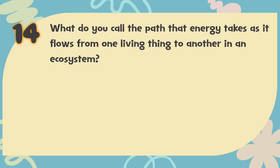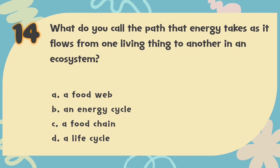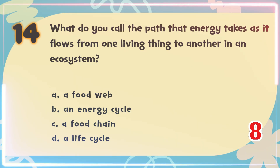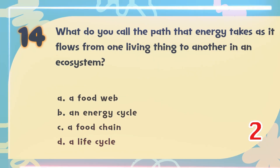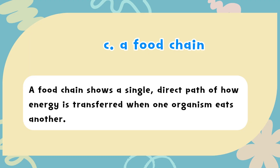Number 14. What do you call the path that energy takes as it flows from one living thing to another in an ecosystem? The choices are: A. A food web, B. An energy cycle, C. A food chain, D. A life cycle. The correct answer is C. A food chain. A food chain shows a single, direct path of how energy is transferred when one organism eats another.